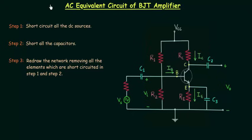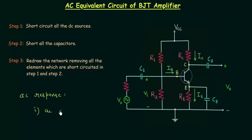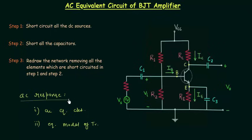In this lecture I will explain how to obtain the AC equivalent circuit of a BJT amplifier. We need the AC equivalent circuit to find out the AC response of the BJT amplifier. Once we have the AC equivalent circuit, we will replace the transistor with its equivalent model. I will start with the AC equivalent circuit and after this we will move to the equivalent model of the transistor.